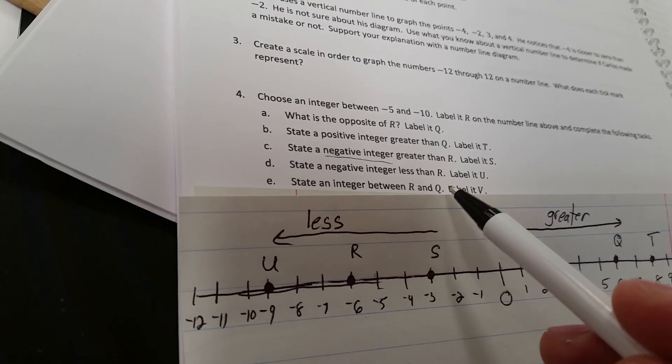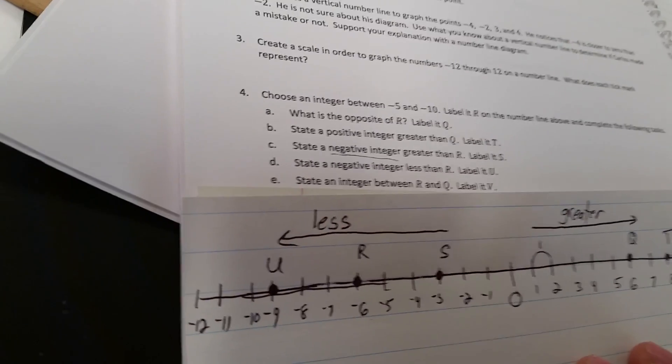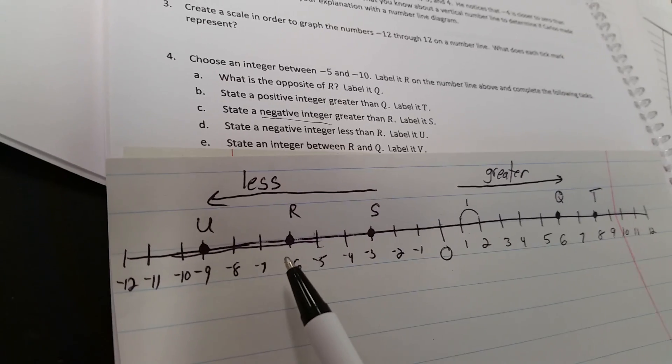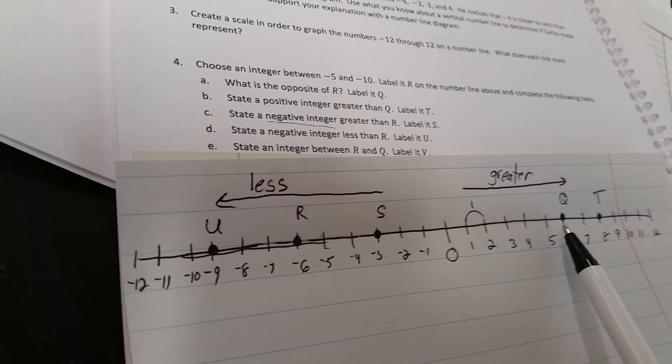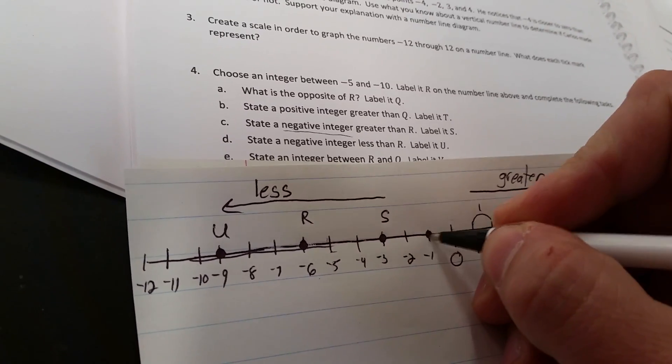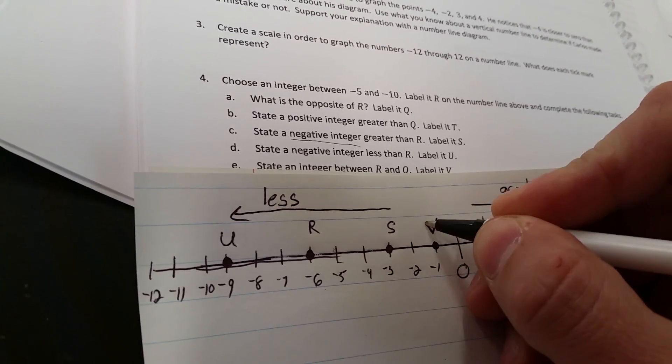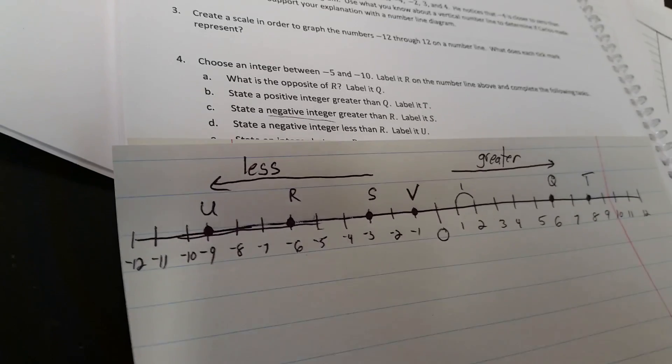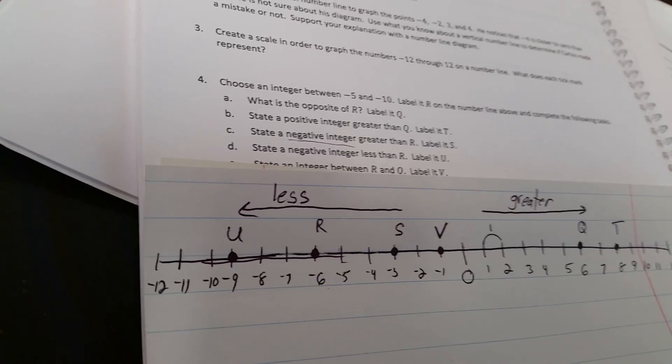And question E. State an integer between r and q and label it v. So here's r. Here's q. And I'm going to pick negative 1. That falls right between those, and label it v. Okay? And that's problem set number 1, questions 3 and 4.